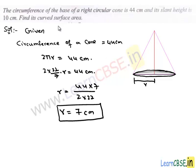We have to find out the curved surface area of this cone. To find this value we are given the slant height, which is equal to 10 cm.